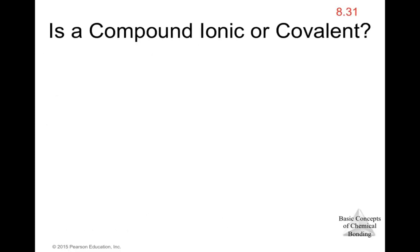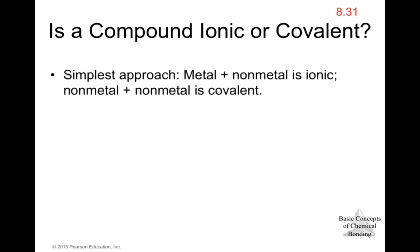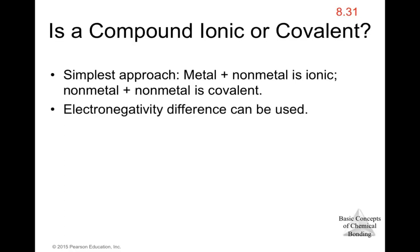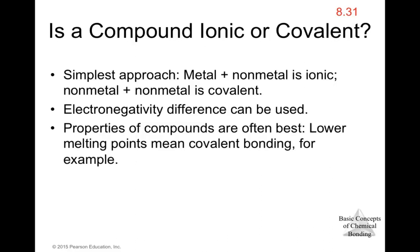How can we determine if a compound is ionic or covalent? One simple approach: if you see a metal with a non-metal, it's ionic; non-metal with non-metal is covalent. Another way is to calculate the electronegativity difference between the two bonded atoms. A third approach is to look at the properties of the compound — for example, lower melting points indicate a covalent compound.